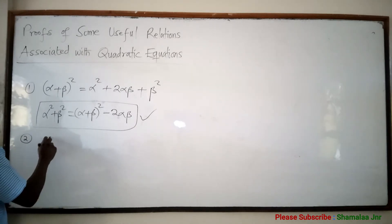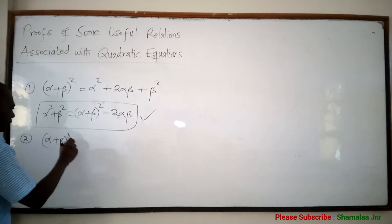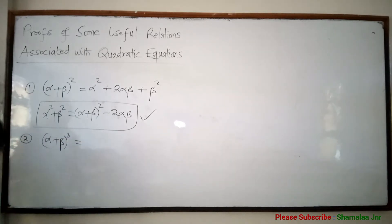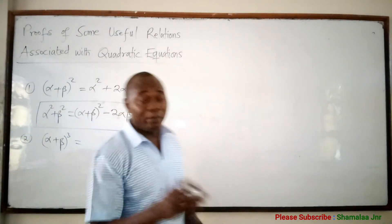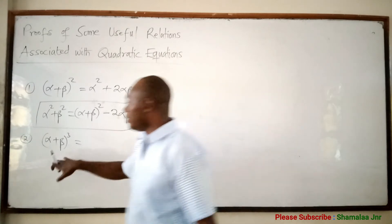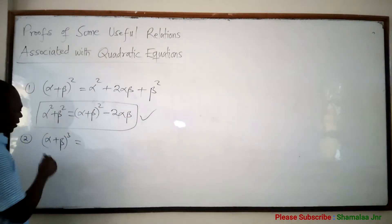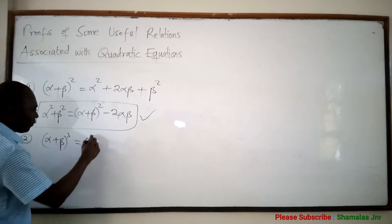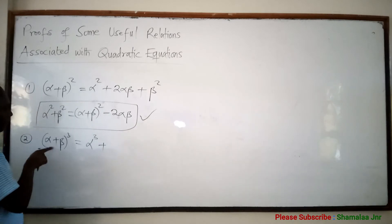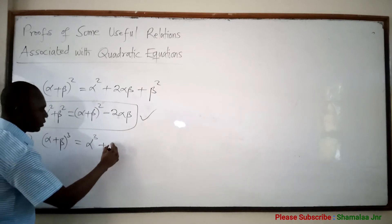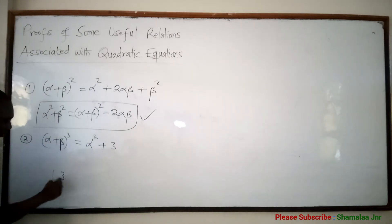You can also have alpha plus beta all cubed. When you have something like this, you can use Pascal's triangle. I have a video on Pascal's triangle — you can use that one to expand this. Using Pascal's triangle, the coefficients are 1, 3, 3, 1. So the first term is 1 times alpha raised to the power 3, beta raised to the power 0, giving alpha cubed. The next term has coefficient 3, so 3 alpha squared beta.